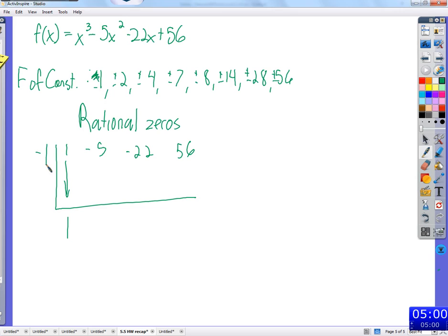So positive one is out. Now I'll try negative one. Negative one times one, negative six. Negative 22 plus six is negative 16, and that's not gonna work. That's not gonna give us a zero.